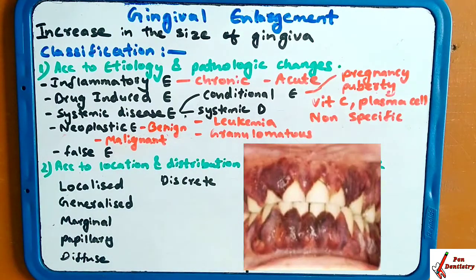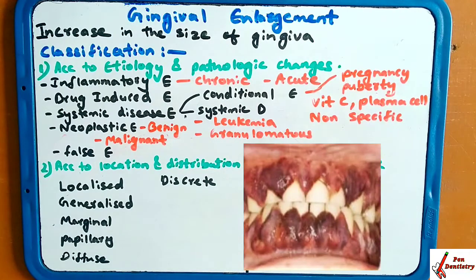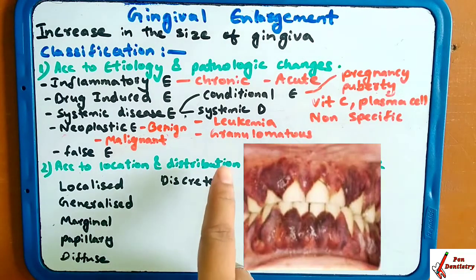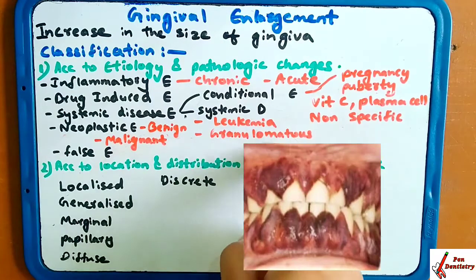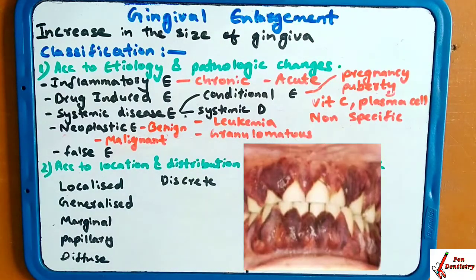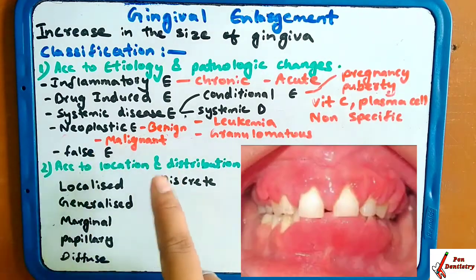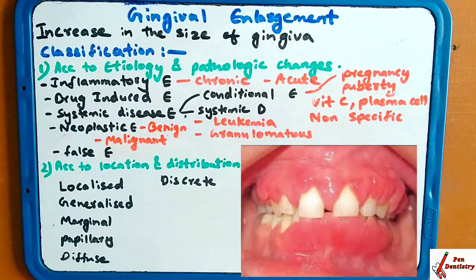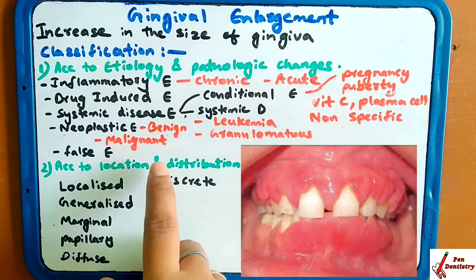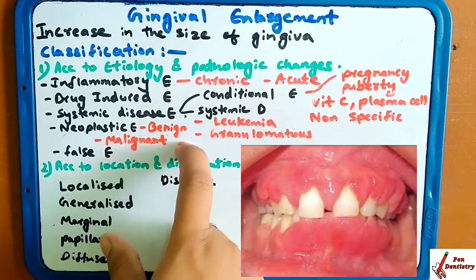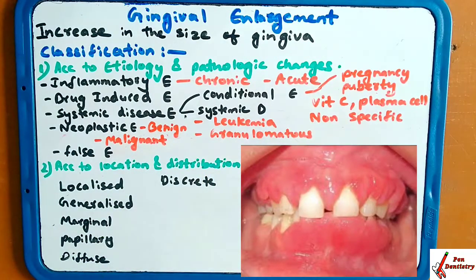Under systemic disease, the kinds of diseases that cause gingival enlargement include: first, leukemia — in leukemia there is an enlargement in the gingiva; and second, granulomatous — in granulomatous disease you can also see gingival enlargement. The fourth type overall is neoplastic, where there is malignancy, whether the tumor is benign or malignant, and gingival enlargement takes place.